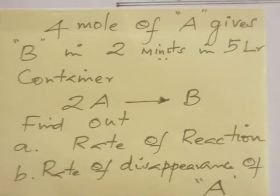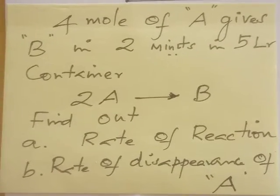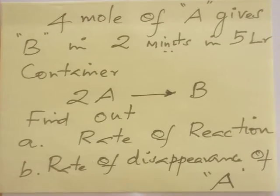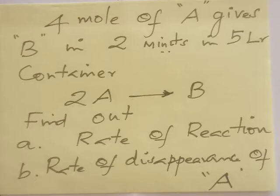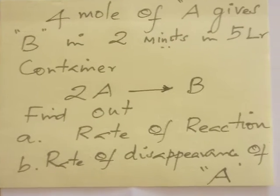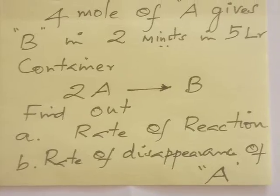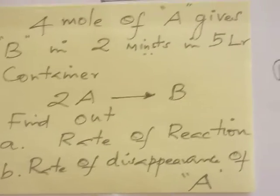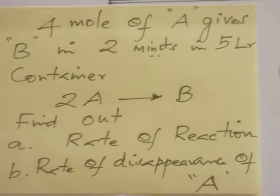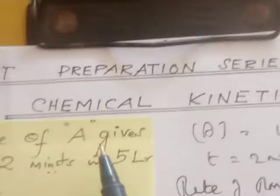4 mol of A gives B in 2 minutes in a 5 liter container. The reaction is 2A gives B. Find out the rate of reaction and the rate of disappearance of A. Now let us see the problem. They are giving 4 mol of A and it gives B.